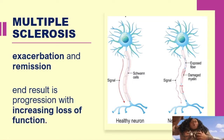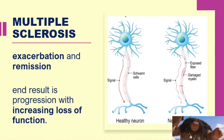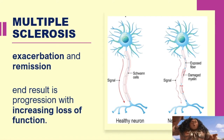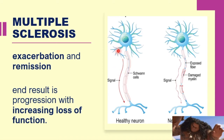Multiple sclerosis is characterized by exacerbation and remission. It can be chronic, lasting a lifetime. There are moments of remission when the patient is not experiencing signs and symptoms, and moments of exacerbation when signs and symptoms are aggravated. The end result is progression with increasing loss of function. In an affected nerve, the damaged myelin causes the signal to be broken rather than continuous, leading to motor problems.